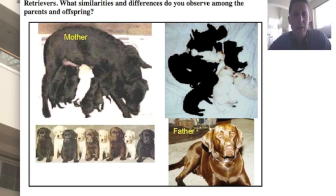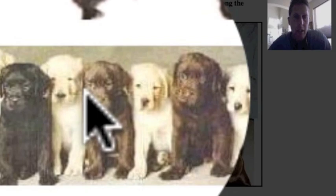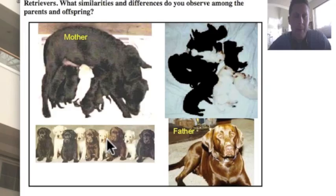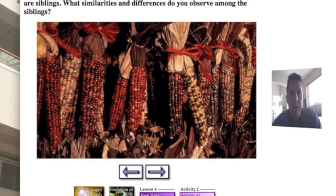Here's a slide showing Labrador Retrievers. Labrador Retrievers come in a number of different colors. We have the father here who's a chocolate color, the mother is black, and the offspring — the puppies — we have the black color, the chocolate color, and also this yellow colored Labrador Retriever. The color is dictated once again by DNA.